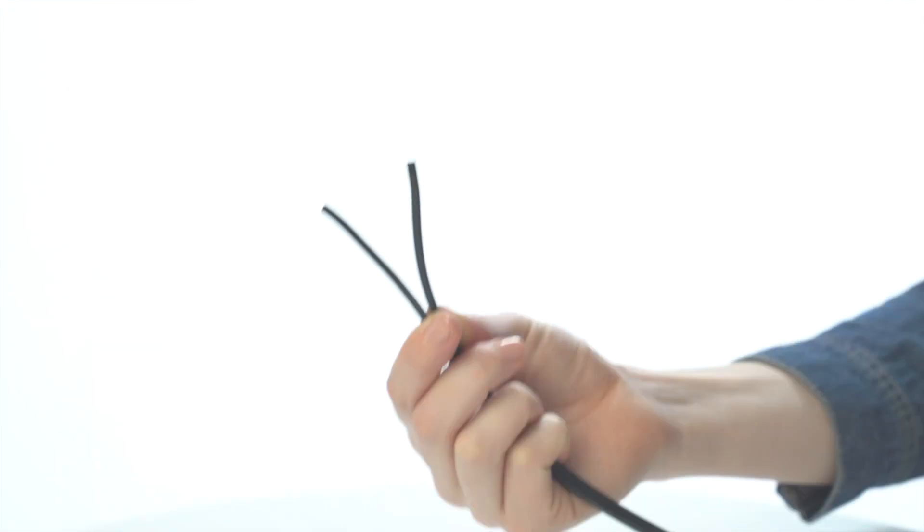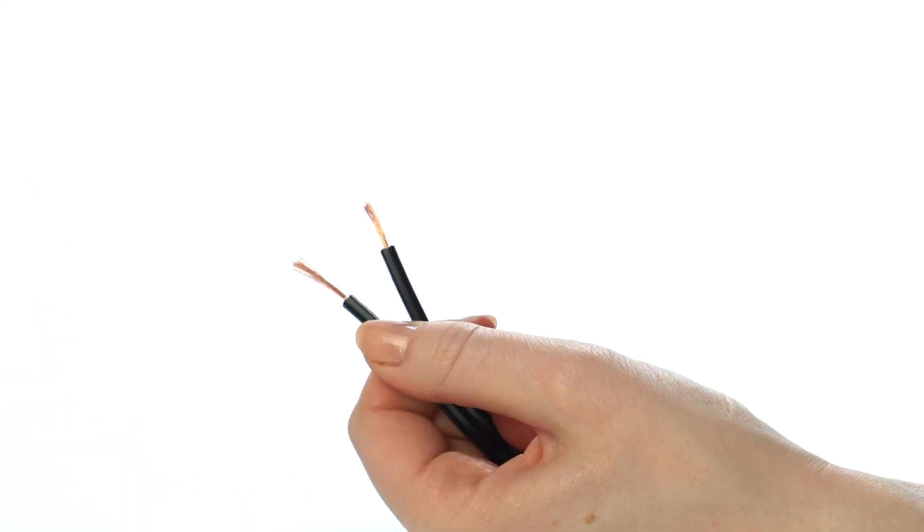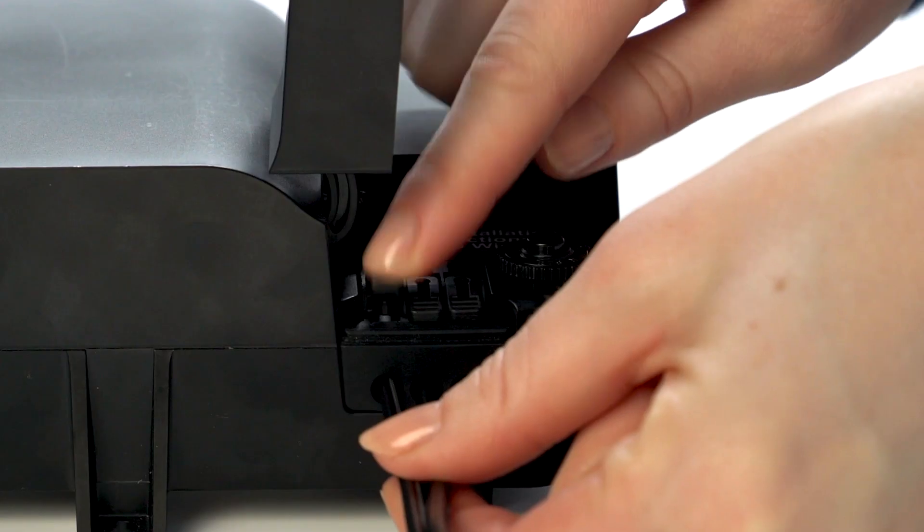If you haven't already, strip a half inch of insulation from the ends of the wires from your lights. Insert the wires into the two terminals you've opened, then flip the levers closed to make the connection.